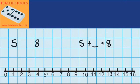Now I can solve this problem by finding 5 on my number line and then counting on until I get to 8. So I have 5, 6, 7, 8.